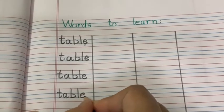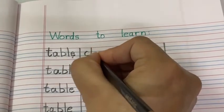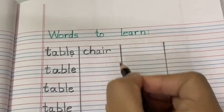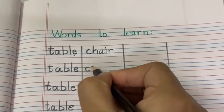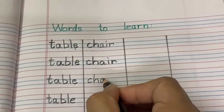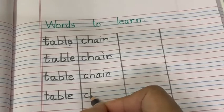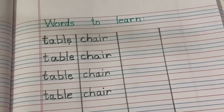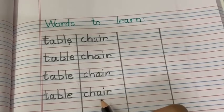Now, next word is chair. C-H together 'chuh', A-I-R. Chair. C-H-A-I-R. Come on, C-H together 'chuh', A-I-R. Chair. C-H-A-I-R. One more time: C-H together 'chuh', A-I together - this is the long sound of vowel A. Chair. A-I together makes 'ay'.